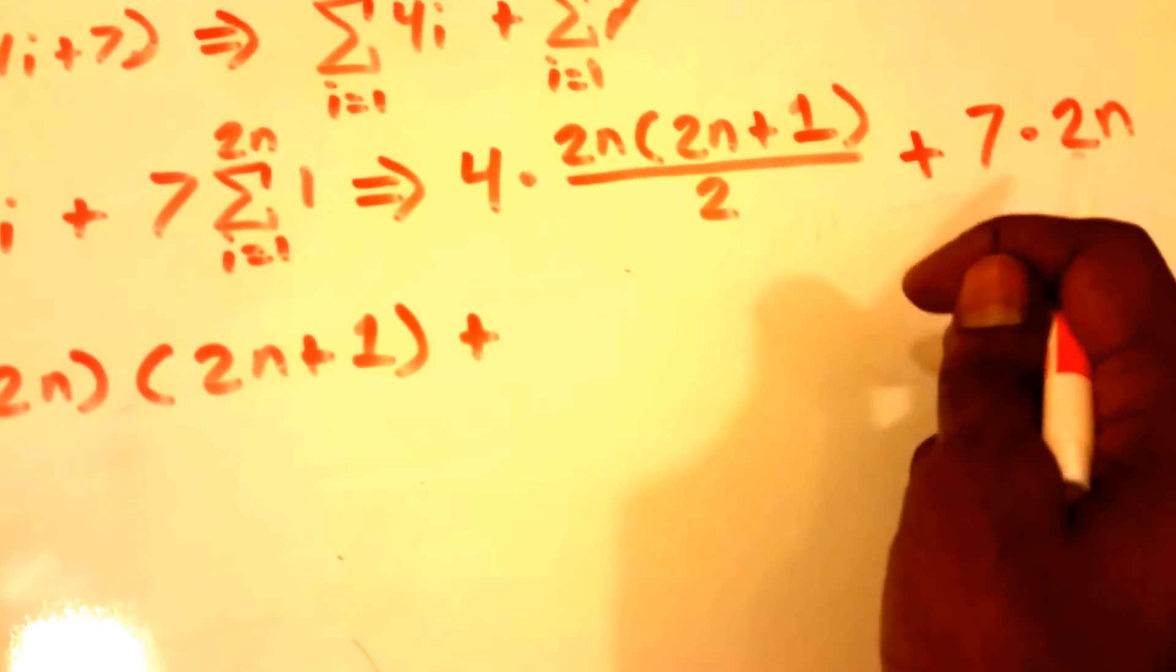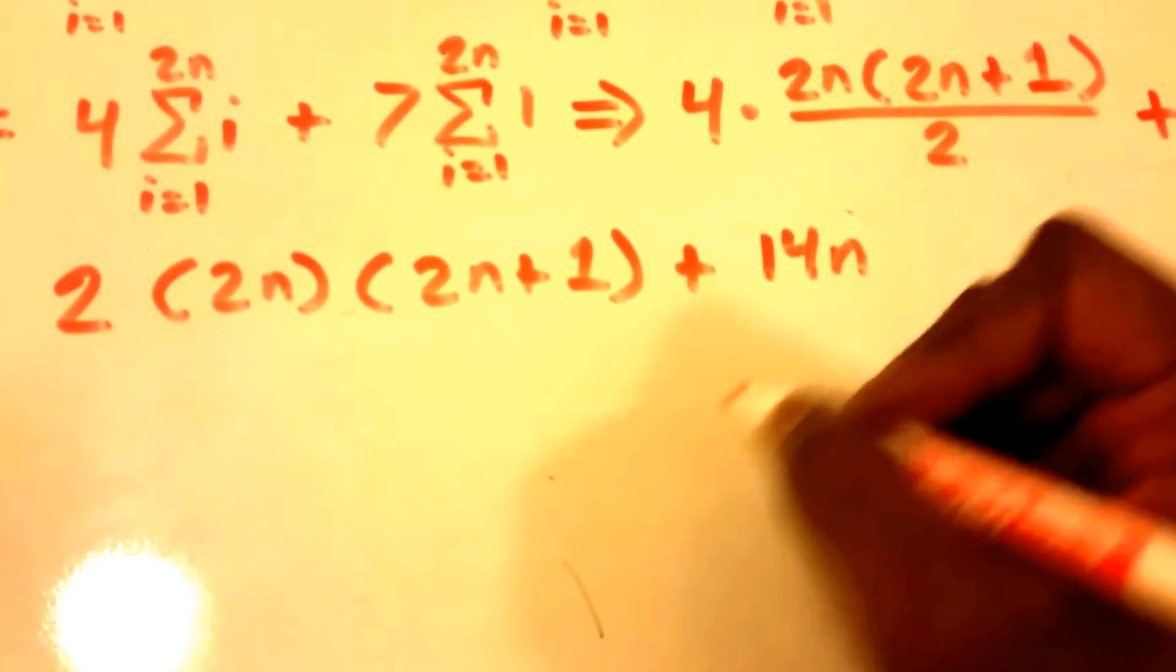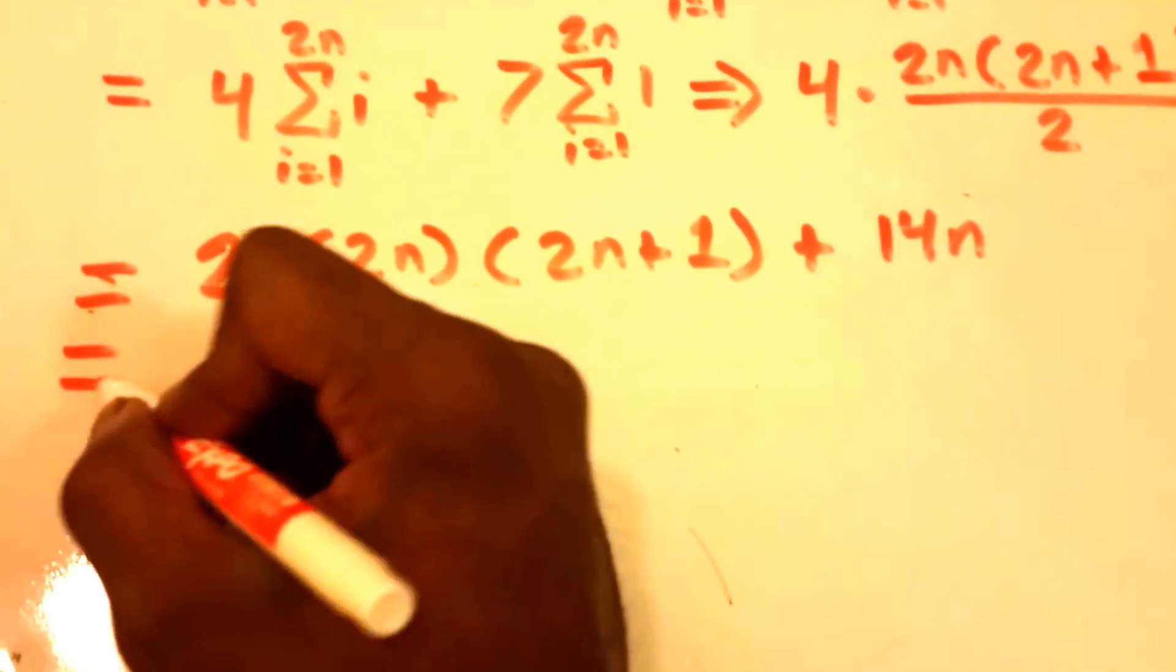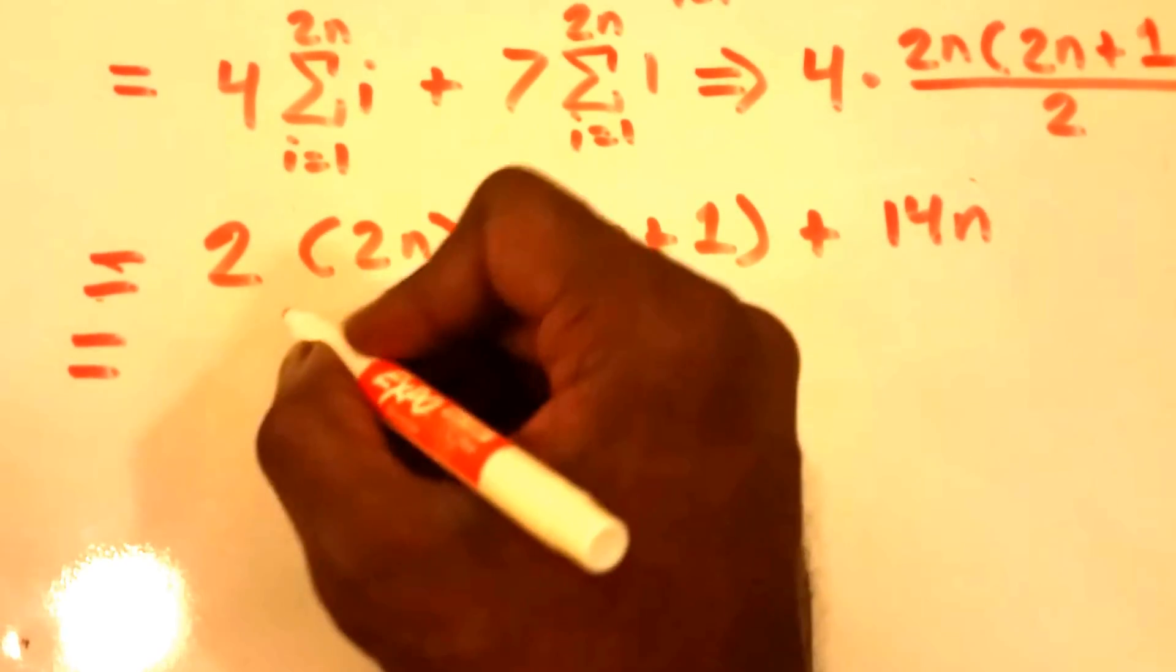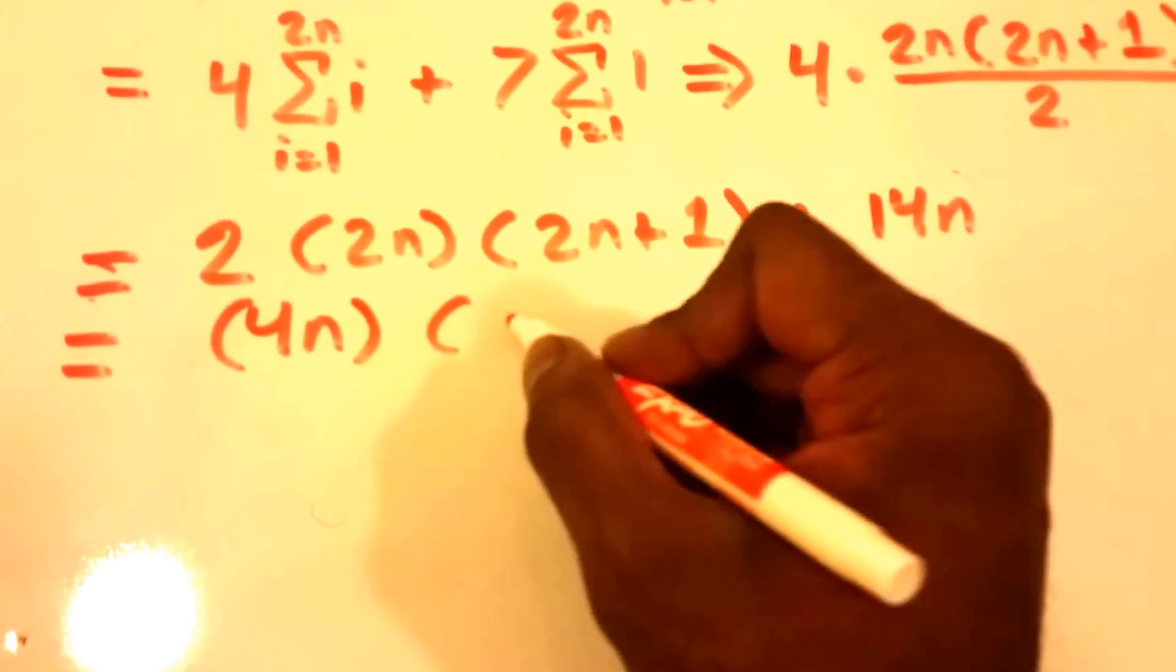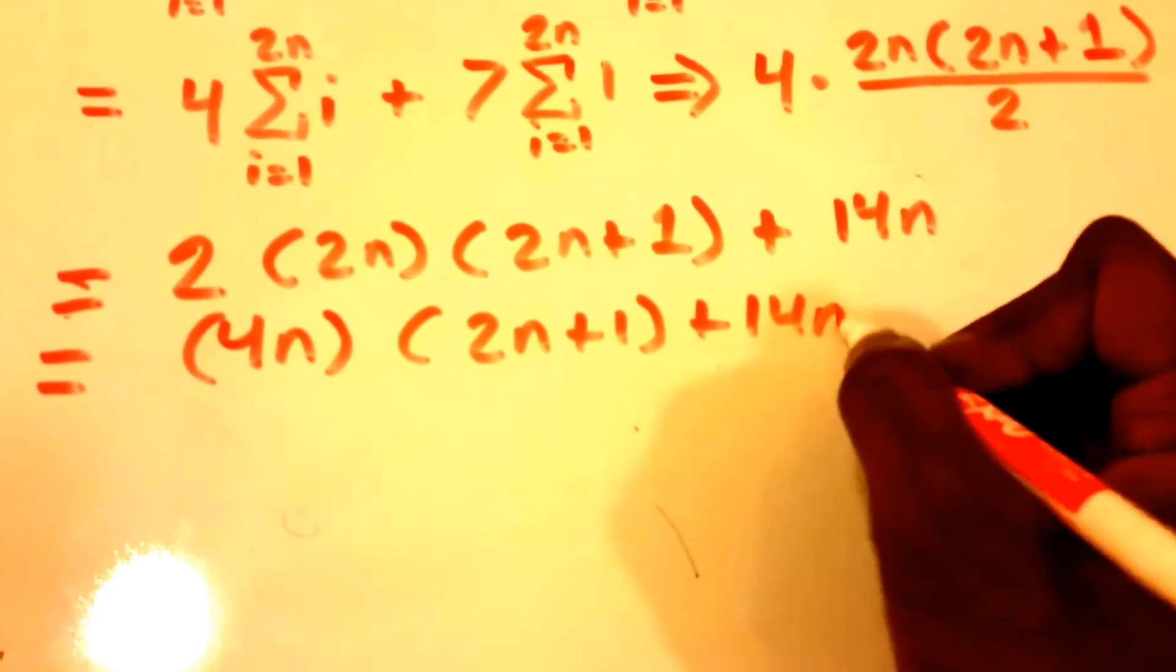Plus 7 times 2n, so I'll put 14n here. It's looking pretty good so far. So this is equal to 4n times 2n plus 1, plus 14n.